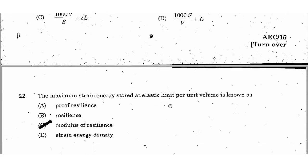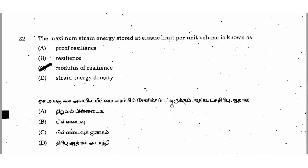Next question: the maximum strain energy stored at elastic limit per unit volume is known as? The right answer is option C, modulus of resilience. The maximum strain energy stored at the elastic limit is called proof resilience. Proof resilience per unit volume is known as modulus of resilience.